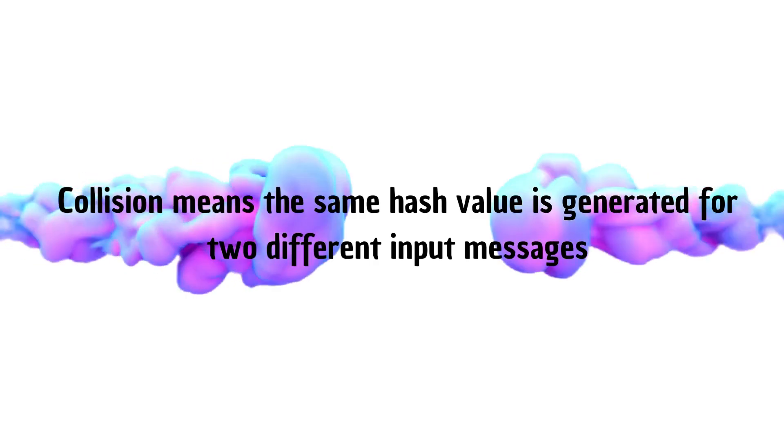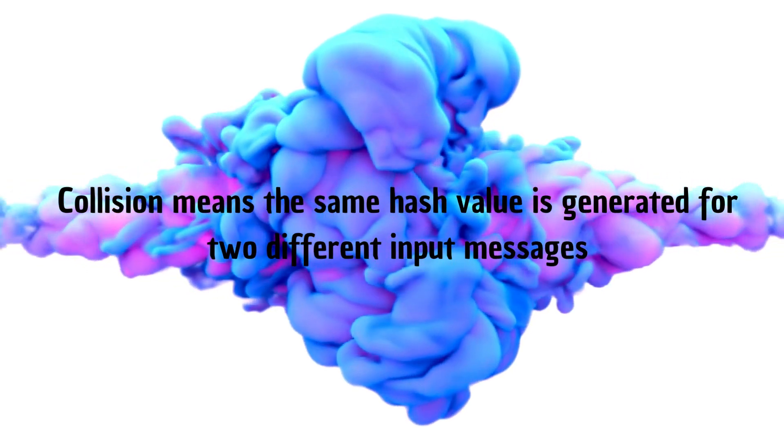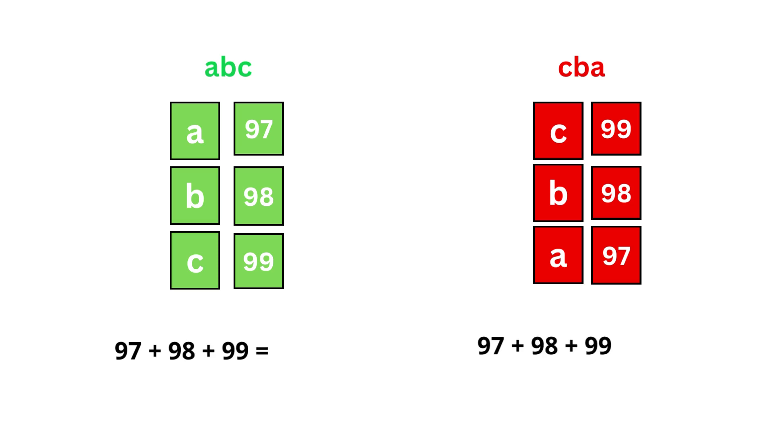There is a problem with the hash function we discussed that it is not collision-resistant. Collision means the same hash value is generated for two different input messages. For example, based on our hash function which is simply adding ASCII values of each character in the string can easily have a collision. We can see here that two strings ABC and CBA would produce the same hash value of 294.